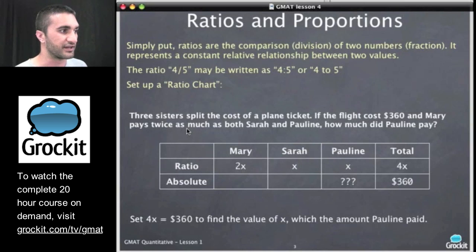And we can see that this question does that here. So three sisters split the cost of a plane ticket. If the flight costs $360 and Mary pays twice as much as both Sarah and Pauline, how much did Pauline pay? So the question is asking us about how much Pauline paid. Let's go back and re-represent the information in a way other than English and do it as an information management challenge. So we can make what we call a ratio box, where we have the ratio in one row, we have the absolute numbers in another row, and we have for each column the different variables that we're dealing with here.